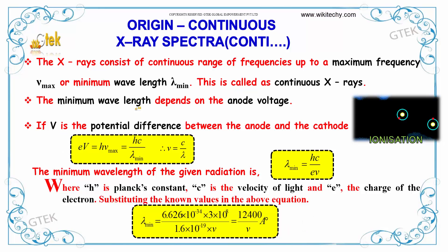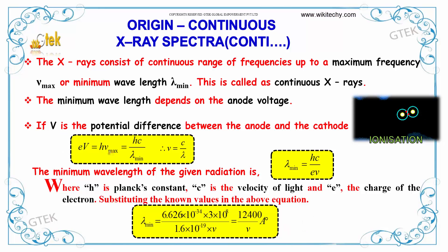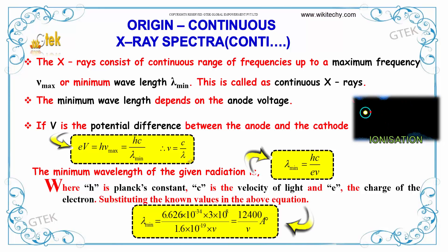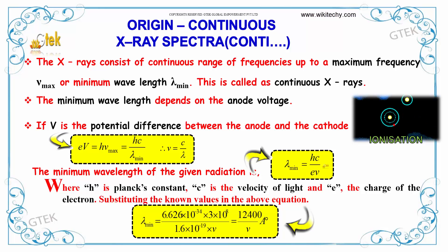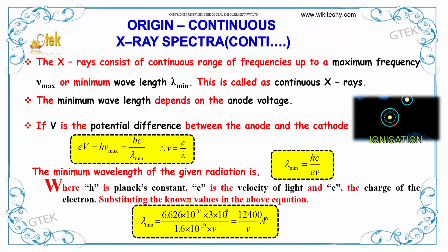The minimum wavelength depends on the anode voltage. If V is the potential difference between anode and cathode, then eV = hν_max = hc / λ_min. The minimum wavelength is given by lambda minimum = hc / eV, where h is Planck's constant, c is the velocity of light, and e is the charge of the electron.